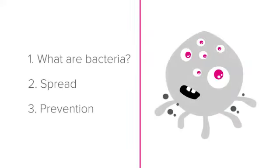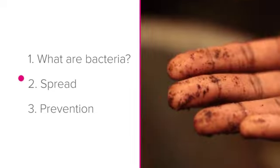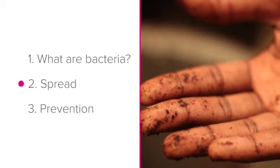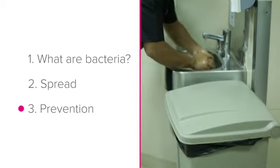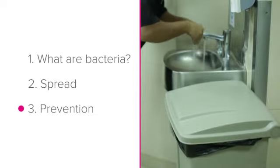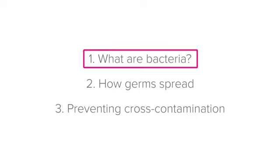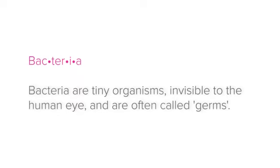We'll be asking the question: what are bacteria? Taking a look at how spoilage bacteria are spread and what you can do to prevent cross-contamination. Firstly, what are bacteria? Bacteria are tiny organisms, invisible to the human eye, and are often called germs.